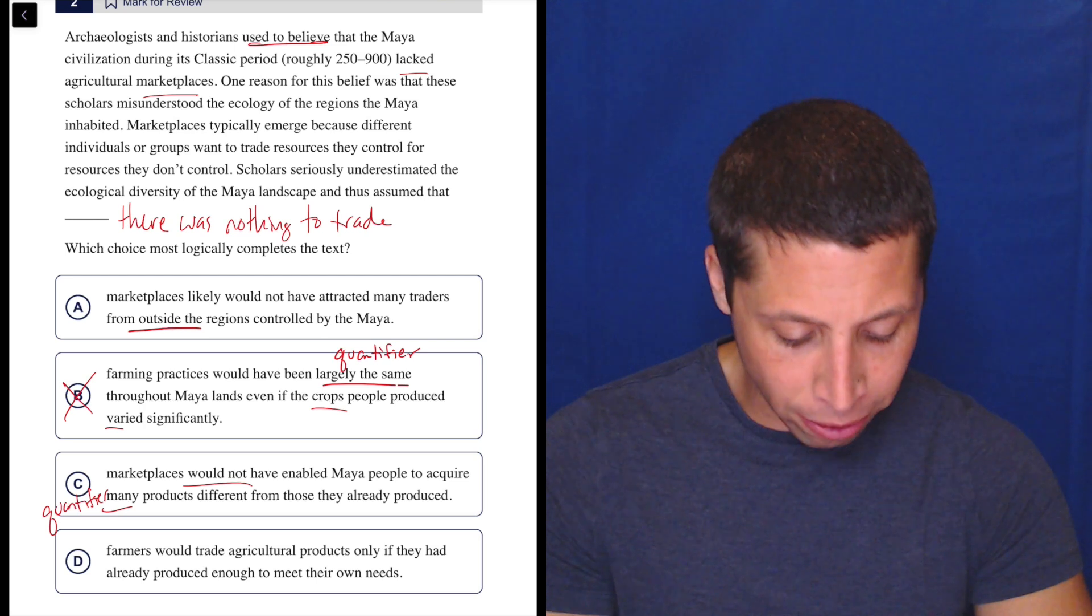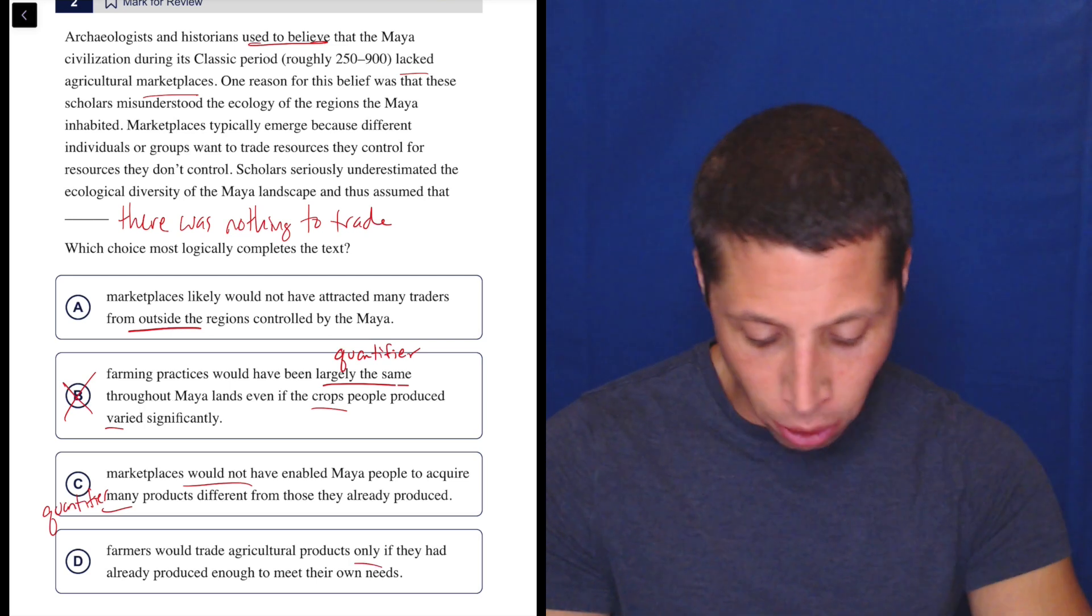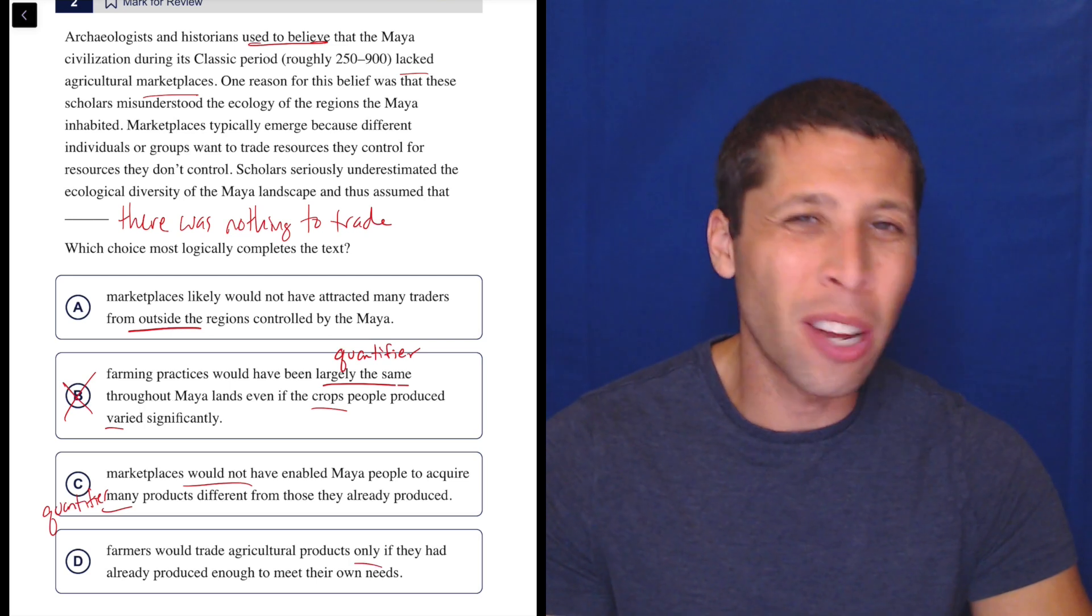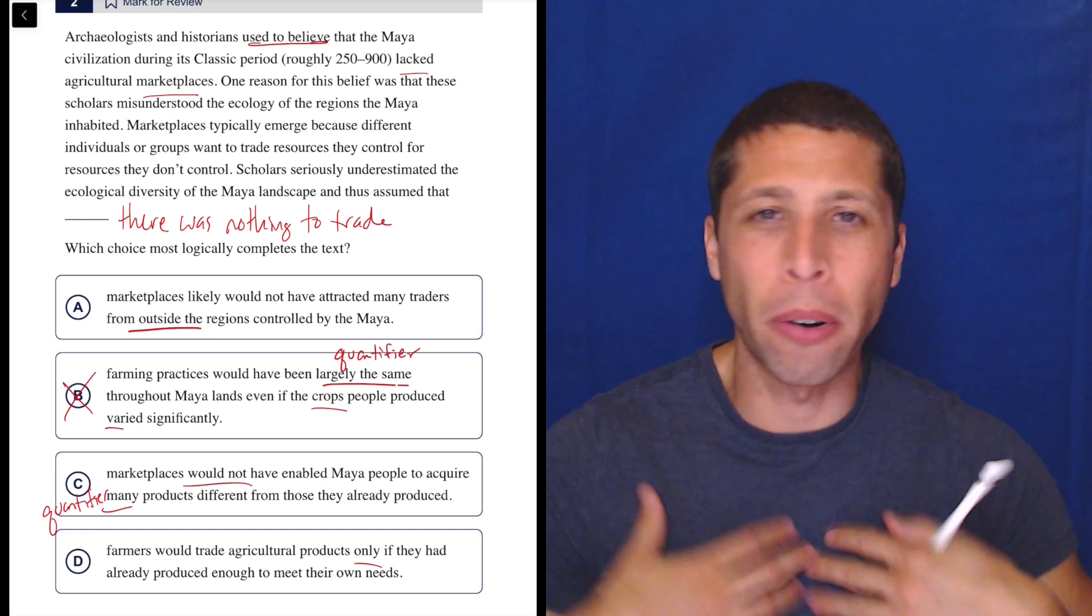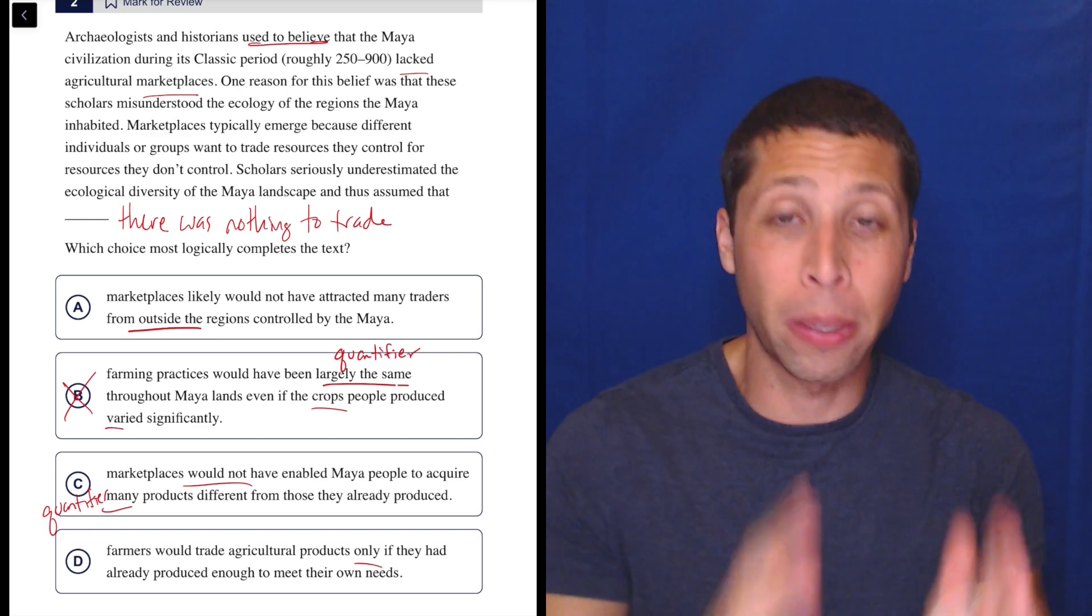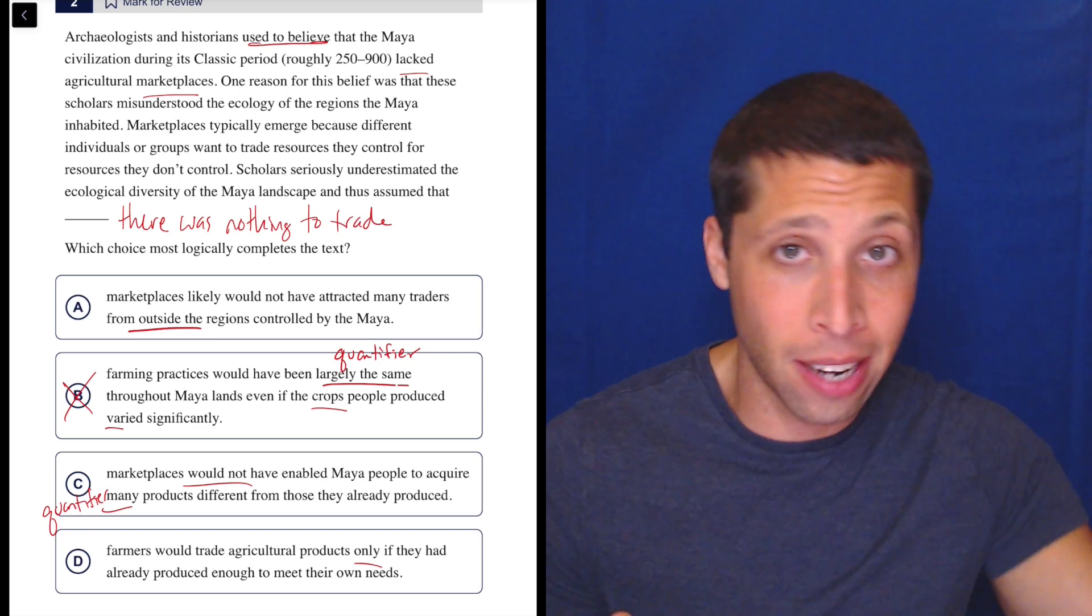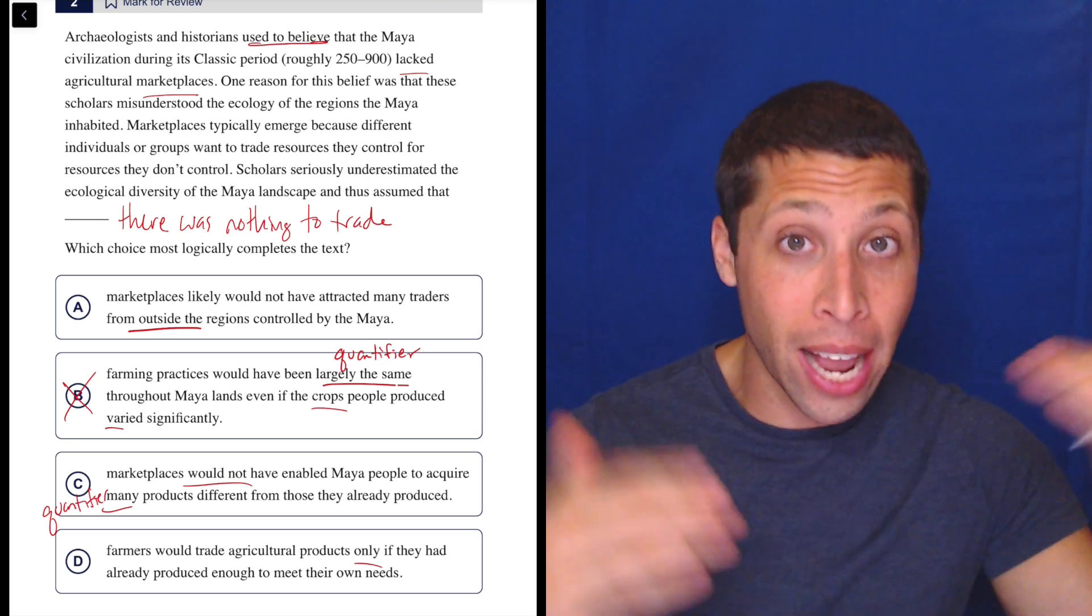Farmers would trade agricultural products only, that's a strong word, if they had already produced enough to meet their own needs. No, no, no. It's not about like, oh, I'm already full, so here's my excess. The marketplace was not about having excess stuff. The marketplace was having a variety of stuff.